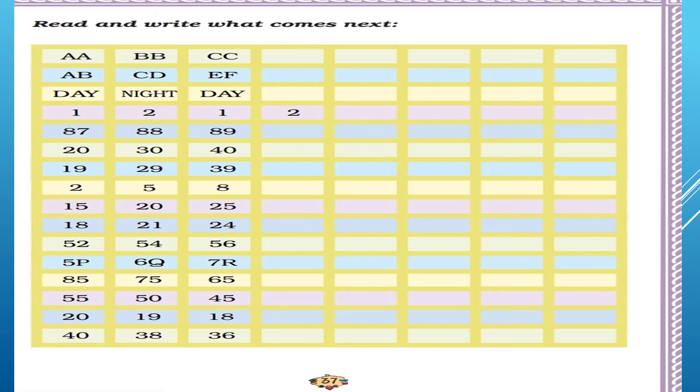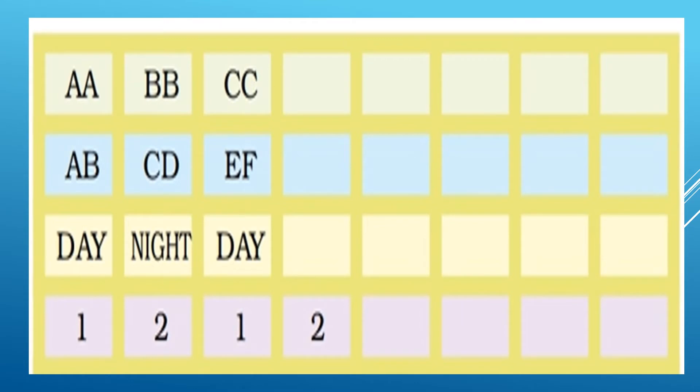Let us try to solve this pattern. What is written here? It is written here, double A, double B, double C.